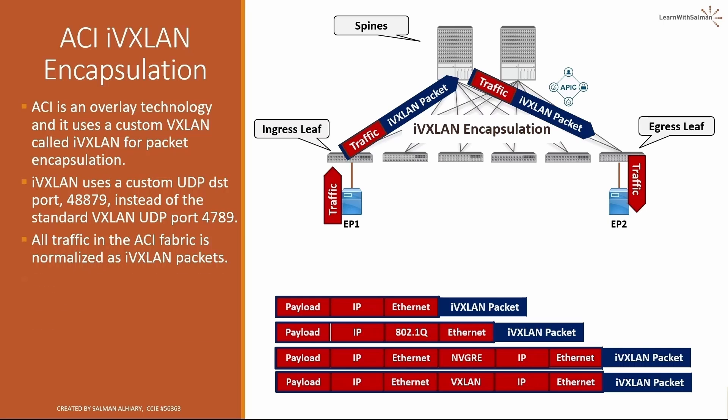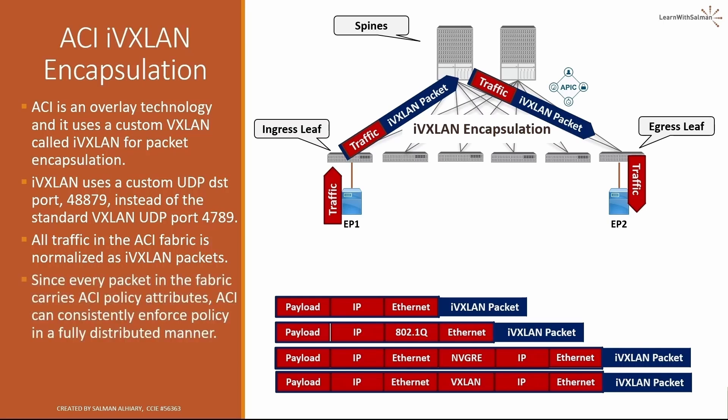With IVXLAN encapsulation, every packet in the ACI fabric carries ACI policy attributes, enabling ACI to consistently enforce policy in a fully distributed manner. If the ingress leaf cannot apply the policy because it doesn't have information about the destination endpoint, then the egress leaf will be able to apply it.